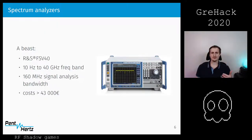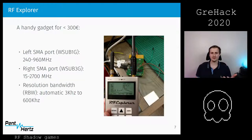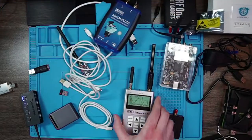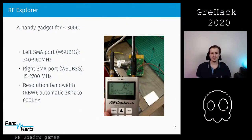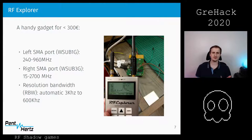The first thing you need when you want to scan or see what is in the air is a spectrum analyzer. You can find spectrum analyzers like the Rohde & Schwarz one, which is pretty expensive, or the RF Explorer which costs around 100 to 300 euros, supports some frequencies, and though its resolution is not as good as the Rohde & Schwarz, it's a very cool gadget to spot frequencies around you.